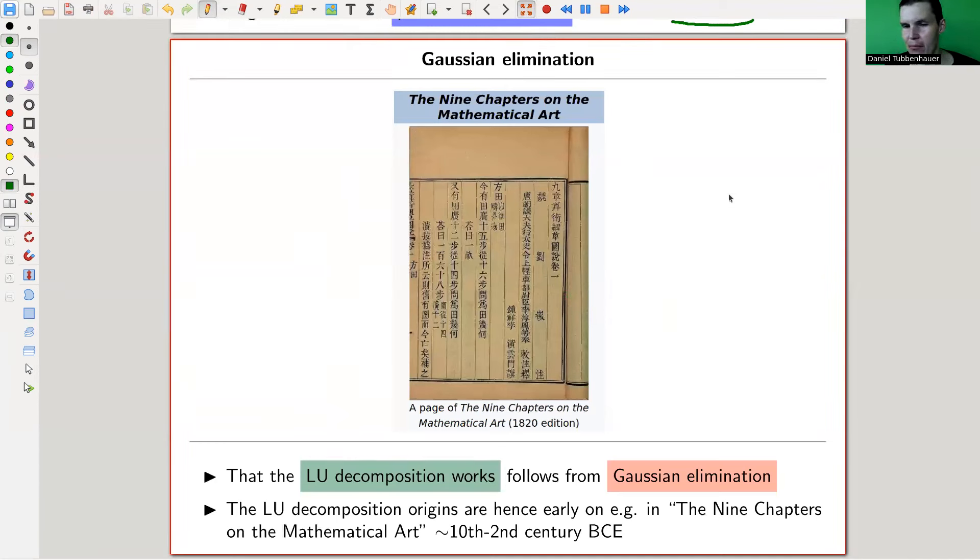So the oldest reference I found was the Nine Chapters on the Mathematical Art, which is a famous Chinese old math book. They wanted to solve linear equations, so they discovered what is called Gaussian elimination, like a few hundred years before Gauss. But it doesn't really matter. It's about solving systems of linear equations. So this LU decomposition is really old.